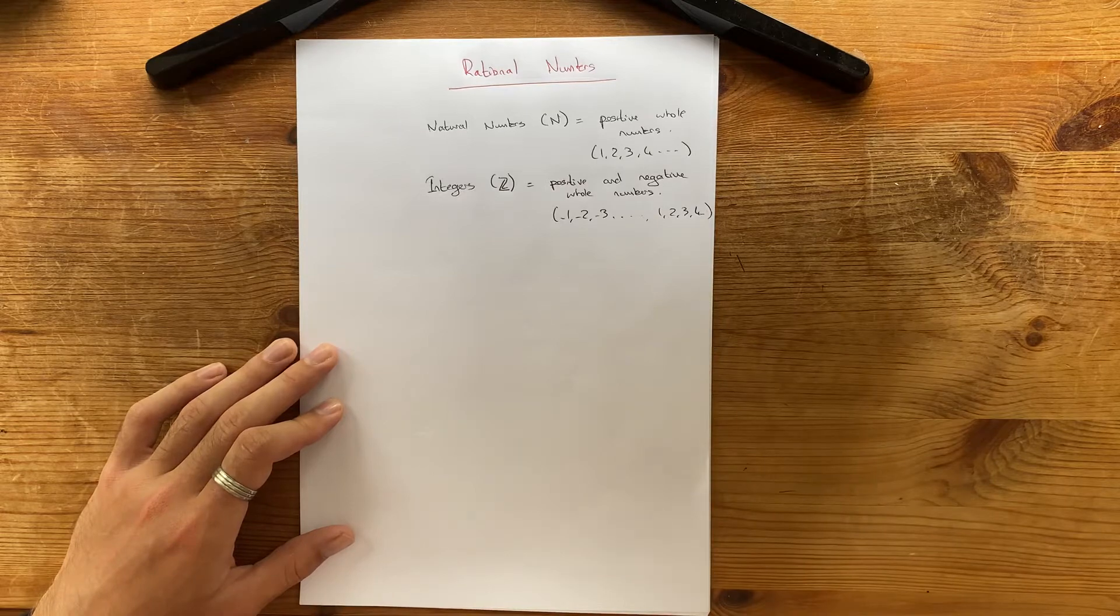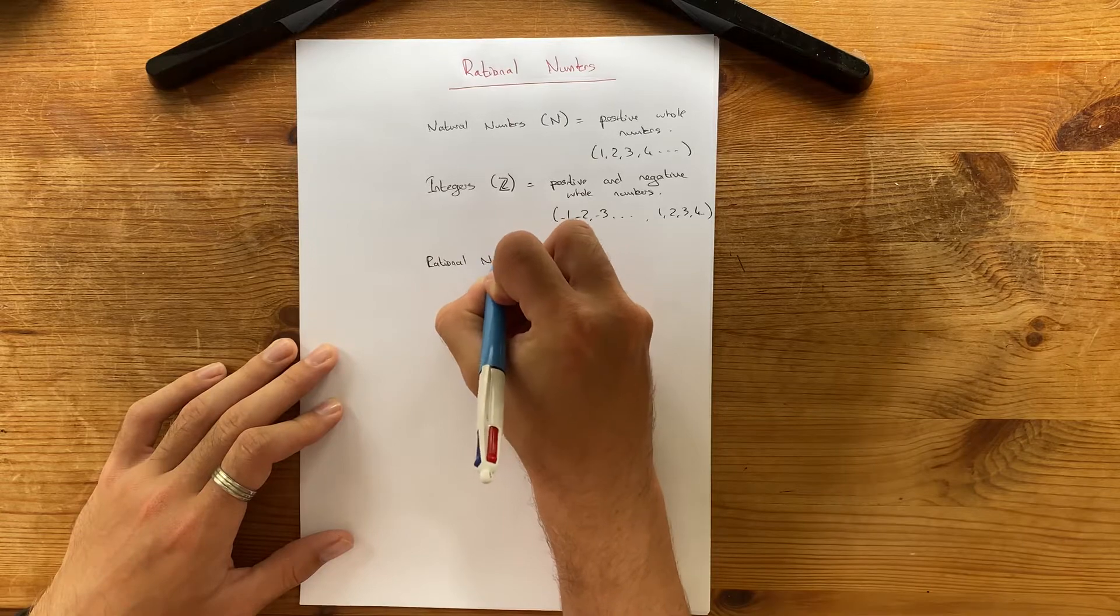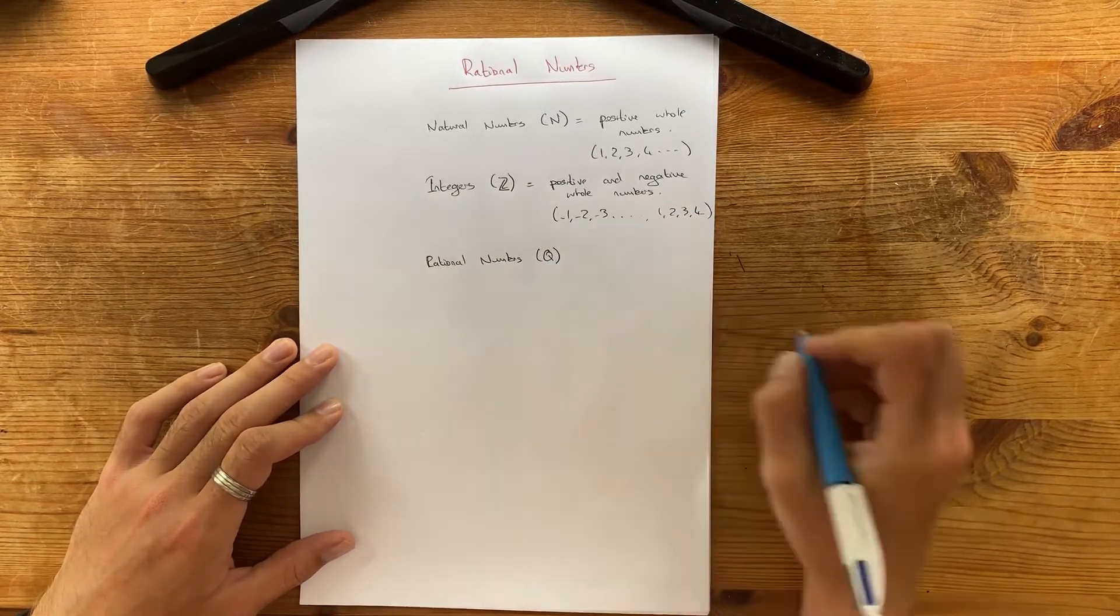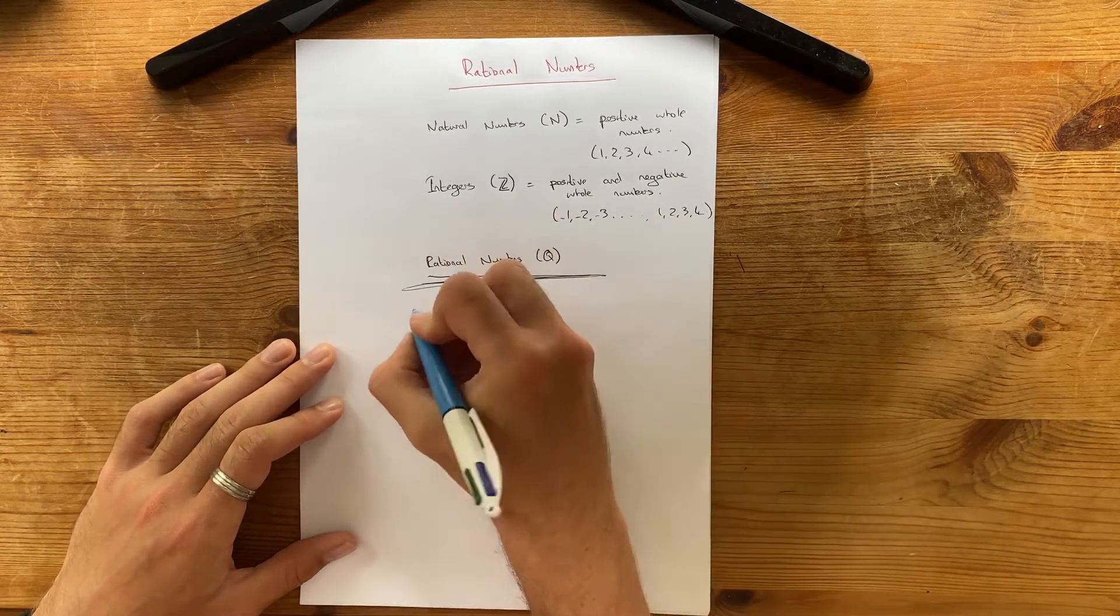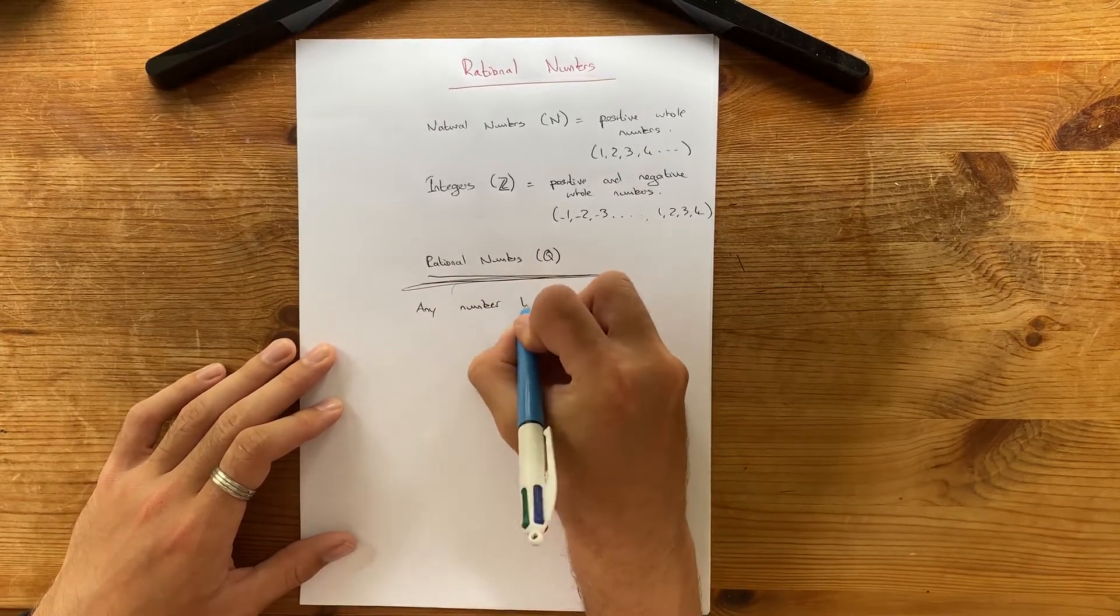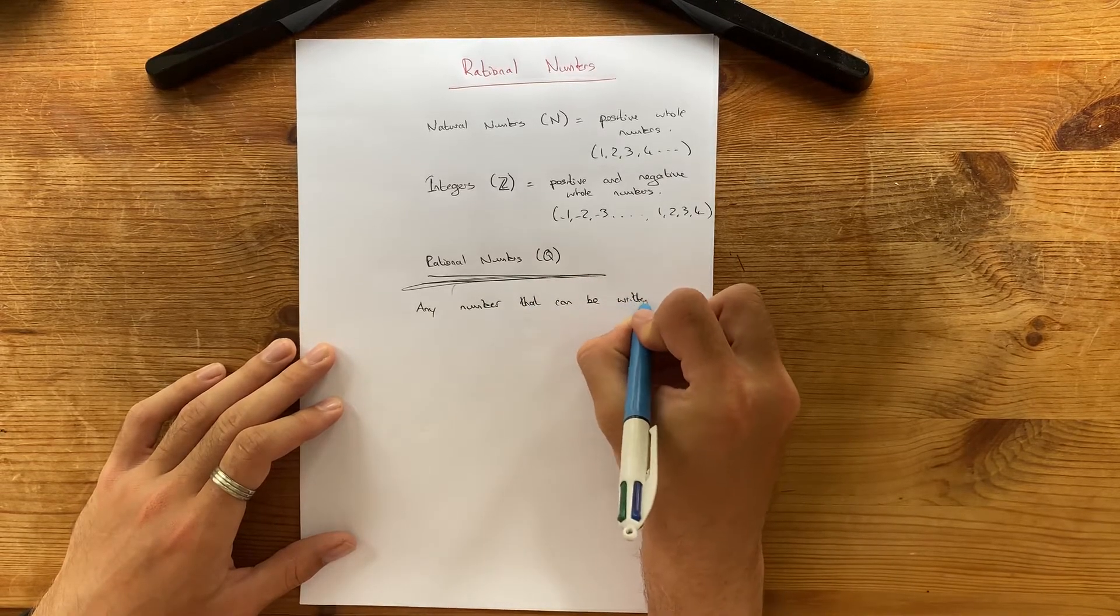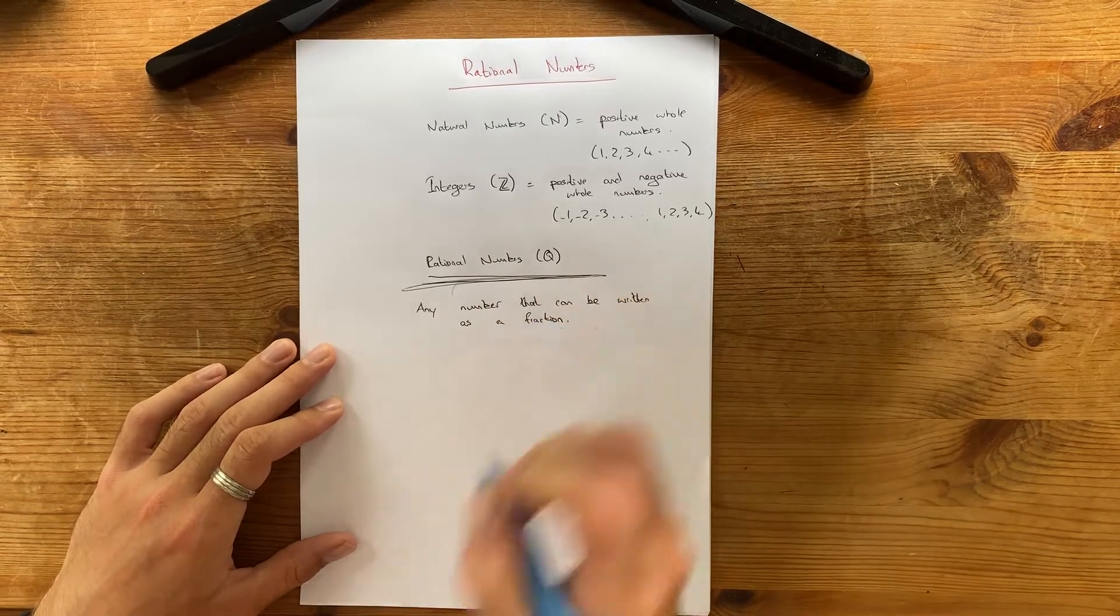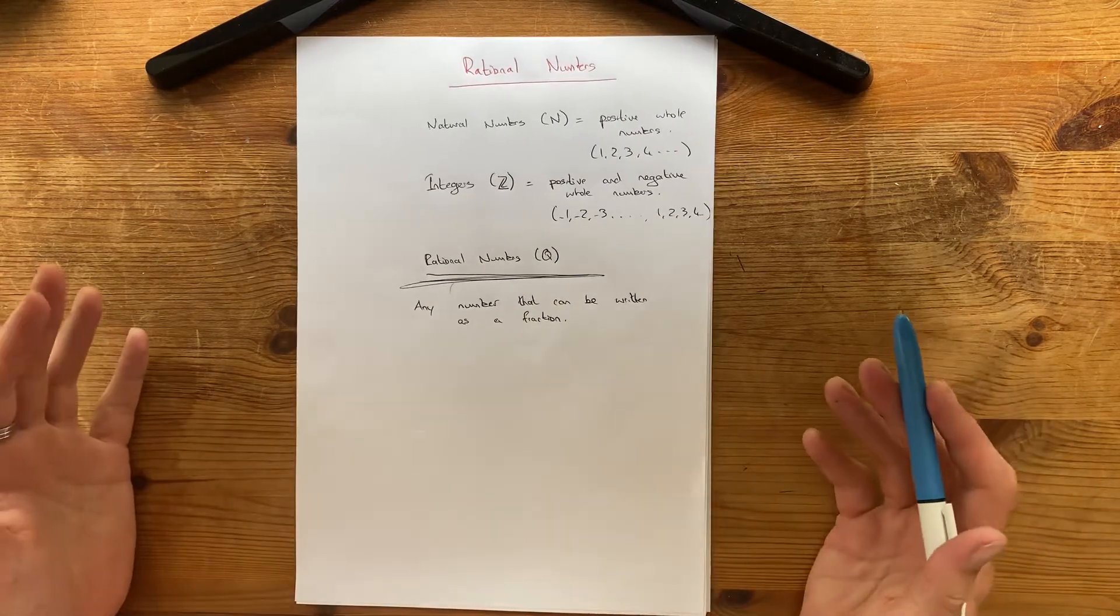And now we're going to look at what's called rational numbers. So a rational number is represented by the letter Q. And rational numbers are slightly different. These are any number that can be written as a fraction. Now, there is a bit more of a longer explanation, but this is the basics of what a rational number is. It's a number that can be written as a fraction.